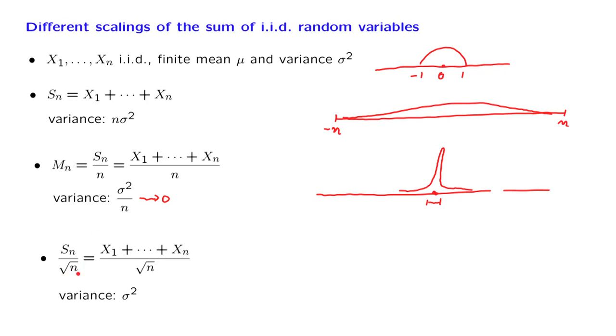This has the following effect. The variance of this ratio is calculated as follows. We take the variance of the numerator, which is n times sigma squared, and then we divide by the square of this number, which is n. And therefore, the variance is equal to sigma squared. What's important here is that the variance stays constant.